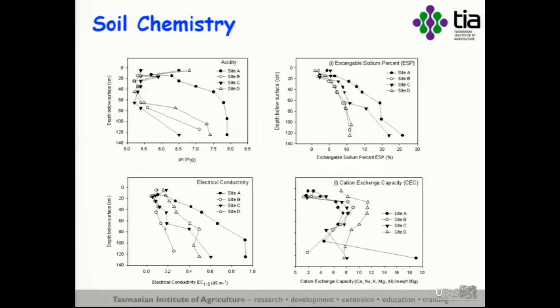Their chemistry also differed. Site A at the bottom of the hill was alkaline; the other three were acid. All of them were sodic. The level of salt — which indicates the extent of leaching through the profile — differed remarkably between the one with the sand columns and some of those without, particularly at the bottom of the profile.